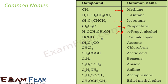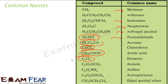This is formaldehyde — a very common name. This is acetone. This is chloroform, CHCl3. Acetic acid is CH3COOH. Benzene has the same IUPAC name. Anisole is benzene with an OCH3 group. Aniline is benzene with an NH2 group. These are some common IUPAC names for common compounds.